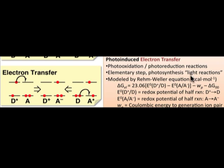These photo-oxidation and reduction reactions are the basis of the elementary steps of the light reaction of photosynthesis, and they can be modeled by the Rehm-Weller equation, where the overall free energy change for the process depends on the donor's oxidation potential and the acceptor's reduction potential.